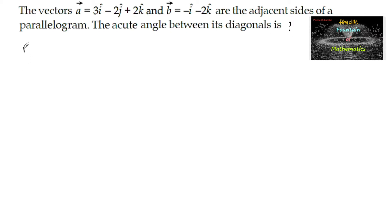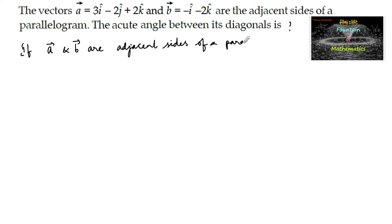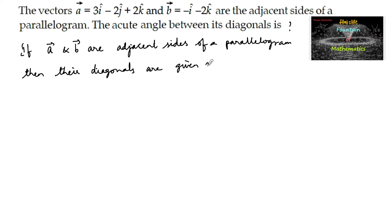Since we know that if vector a and vector b are adjacent sides of a parallelogram, then the diagonals are given as d1 is equal to vector a plus vector b and the other diagonal d2 vector is equal to vector a minus vector b.